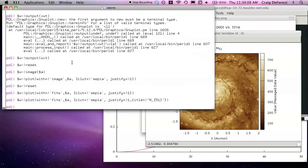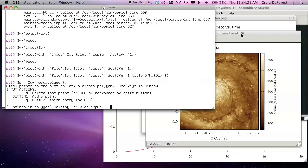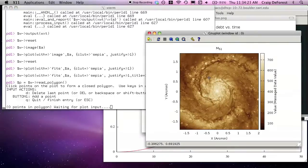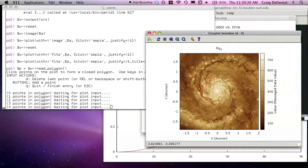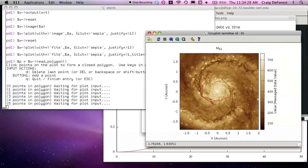Okay, what if we want to pull data out? Let's try this. We can read any mouse input we want. Read polygon. There we go. Read polygon is an event loop that uses the mouse reading. And we can draw, say, the core of the galaxy here.